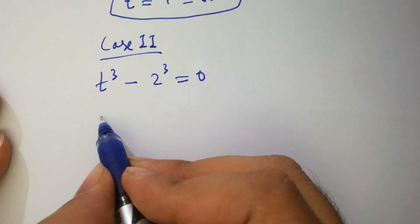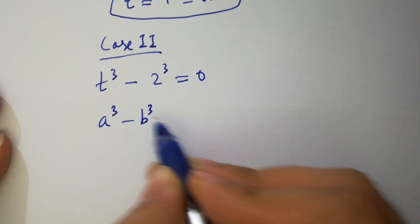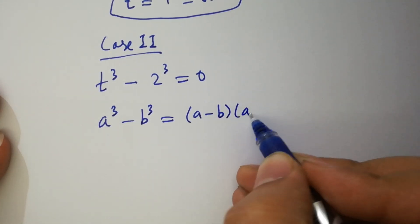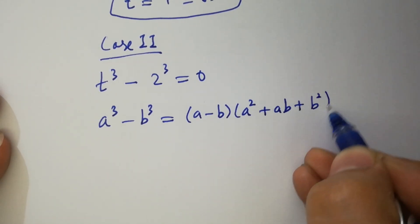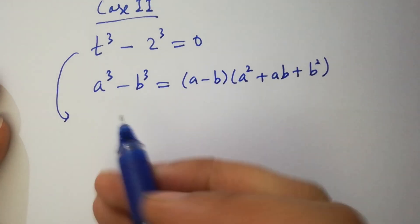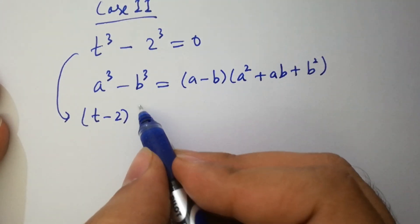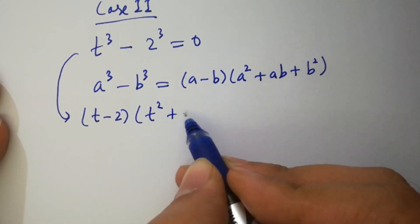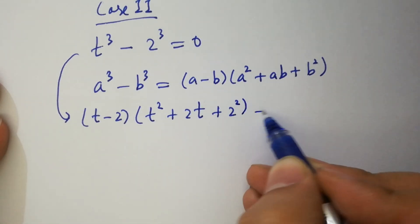As we know, a cubed minus b cubed equals a minus b, times a squared plus ab plus b squared.